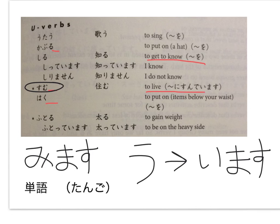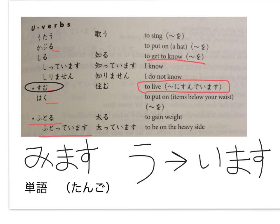You really only use the TE-IRU form of SUMU — SUNDE IMASU. For example, Minnesota ni sunde imasu. HAKU, HAKIMASU. So ZUBON O HAKIMASU. FUTORU means to gain weight, and the TE-IRU form of that is FUTOTTE IMASU.